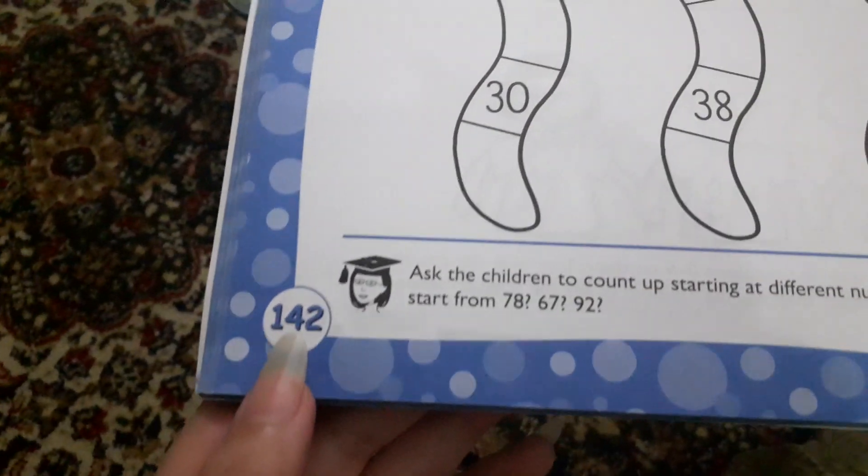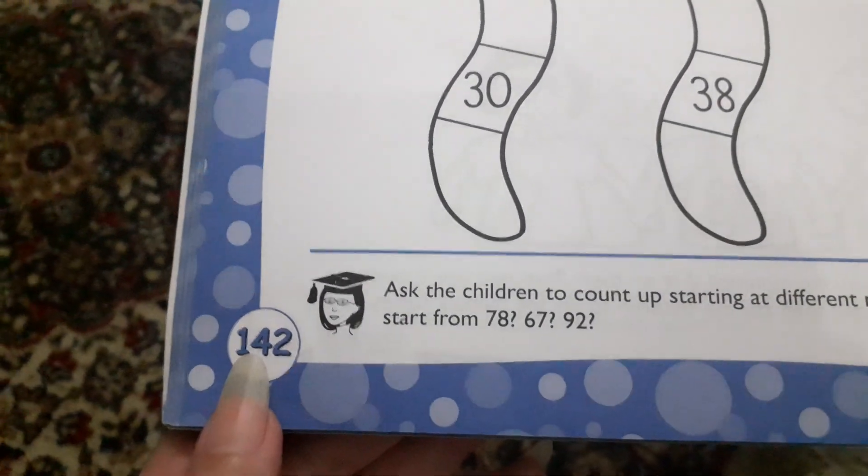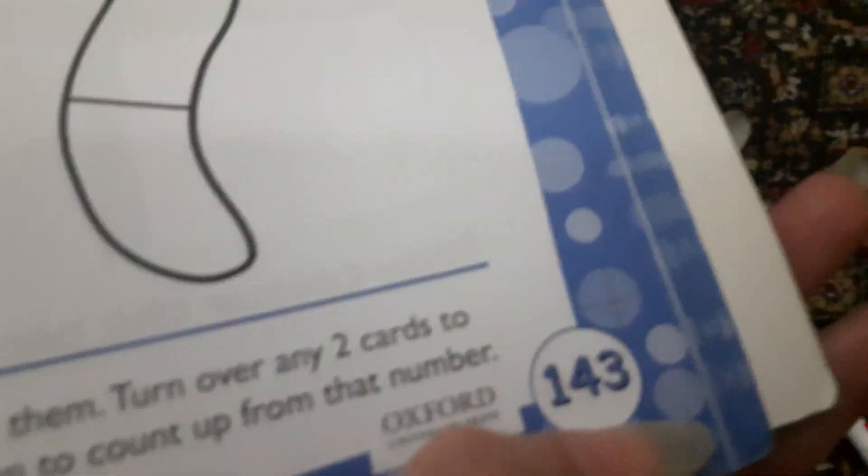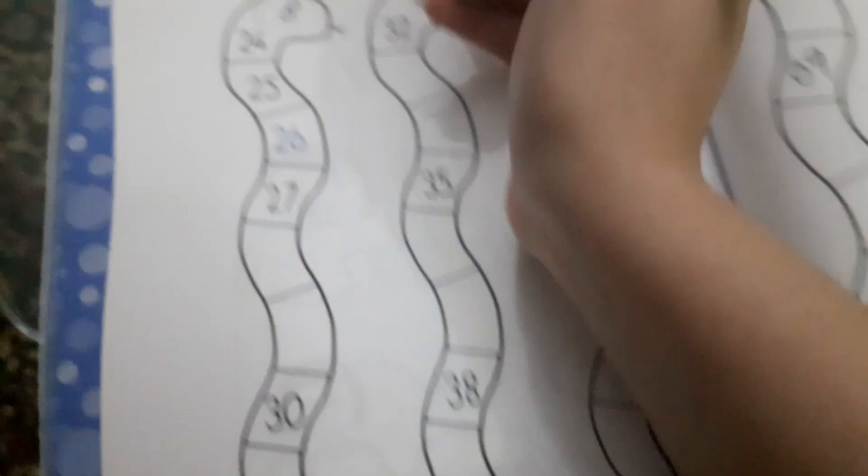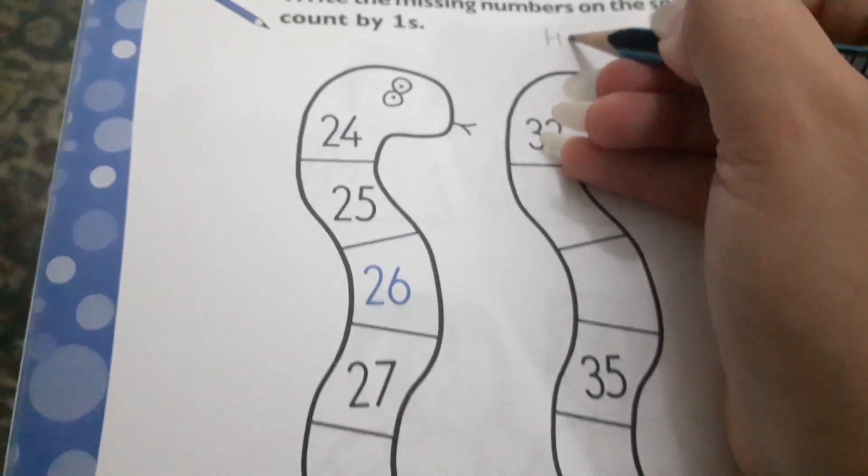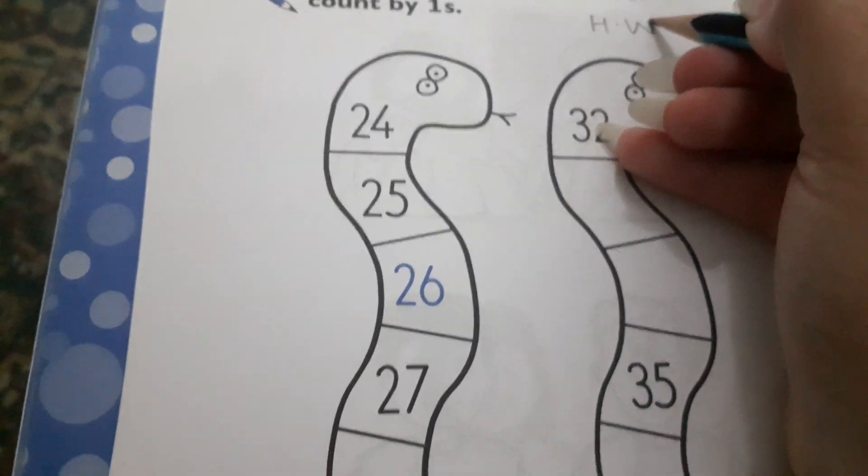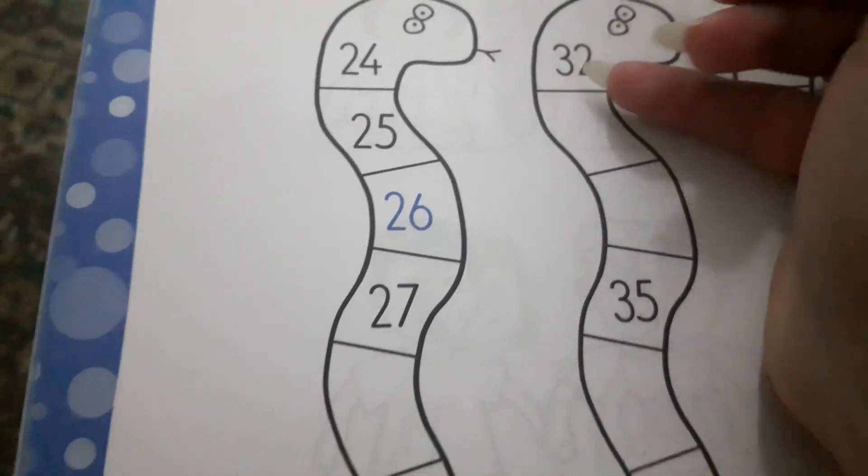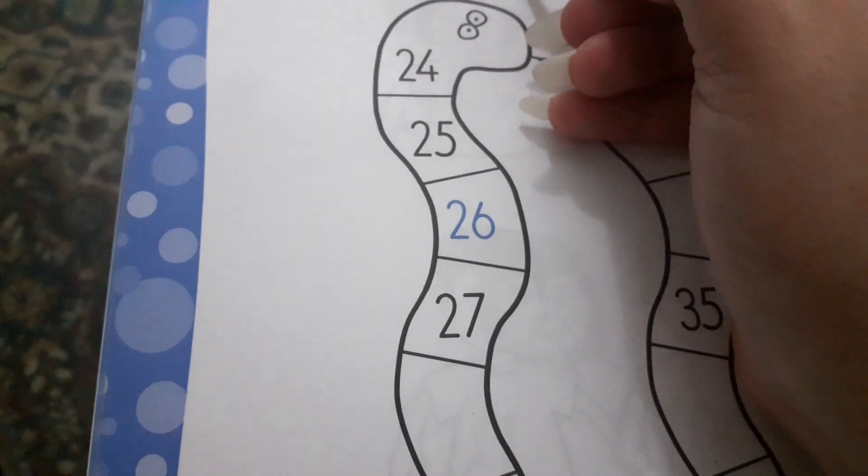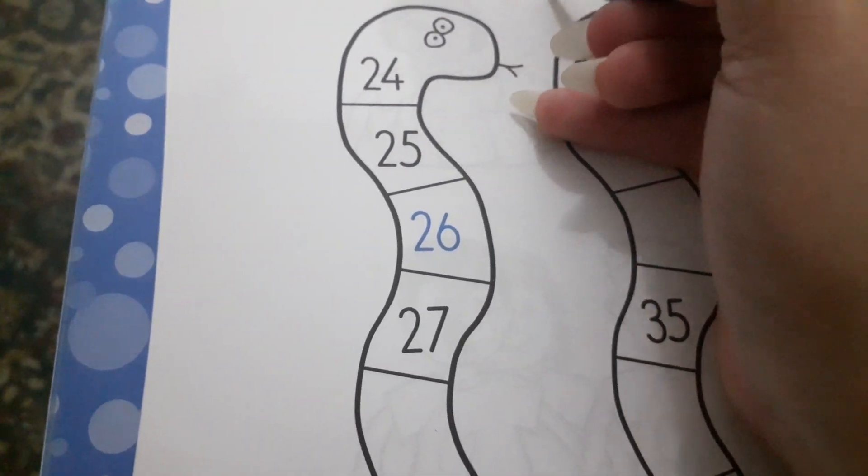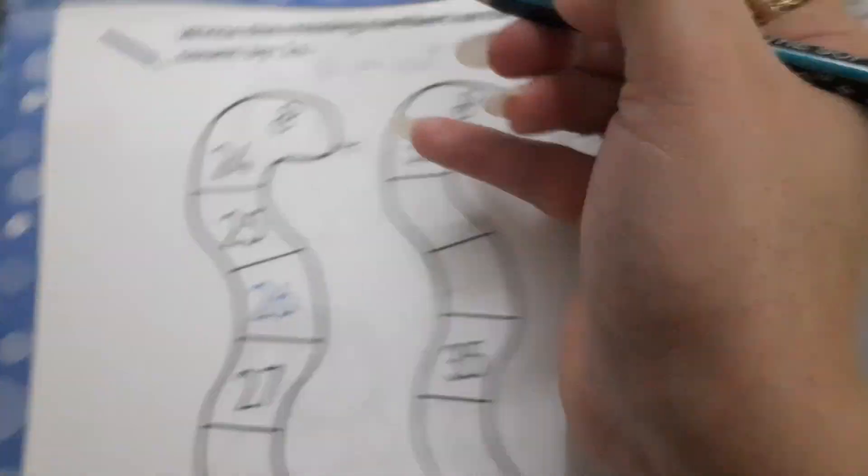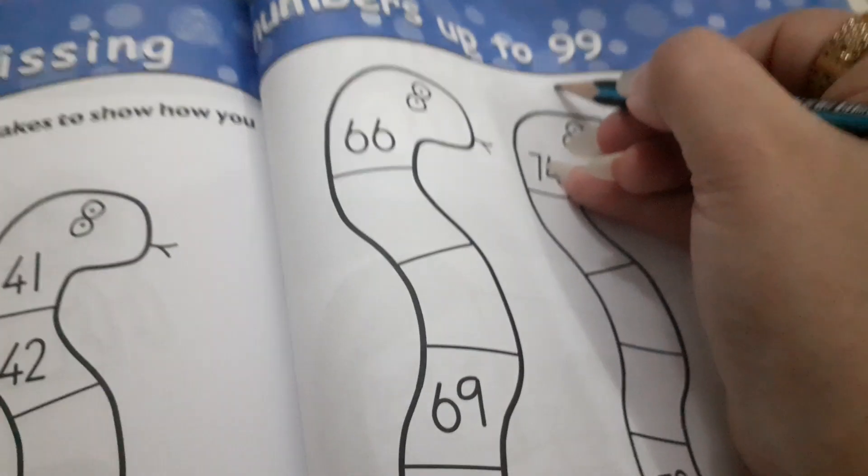This is your homework: page number 142 and 143. These two pages are your homework. What you have to do: just write here HW, and you have to write here the date 8/4/2020. Again, write here HW and date 8/4/2020.